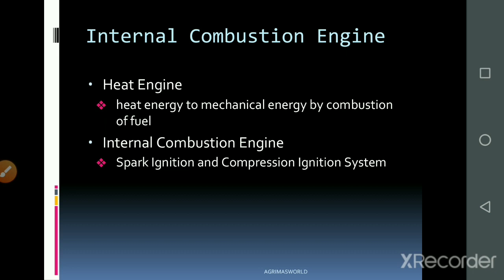The heat engine can be divided into two types: one is the external combustion engine, for example the steam engine, and the other is the internal combustion engine. The internal combustion engine is again divided into two types: spark ignition engines, which we simply call petrol engines, and compression ignition engines, for example diesel engines.